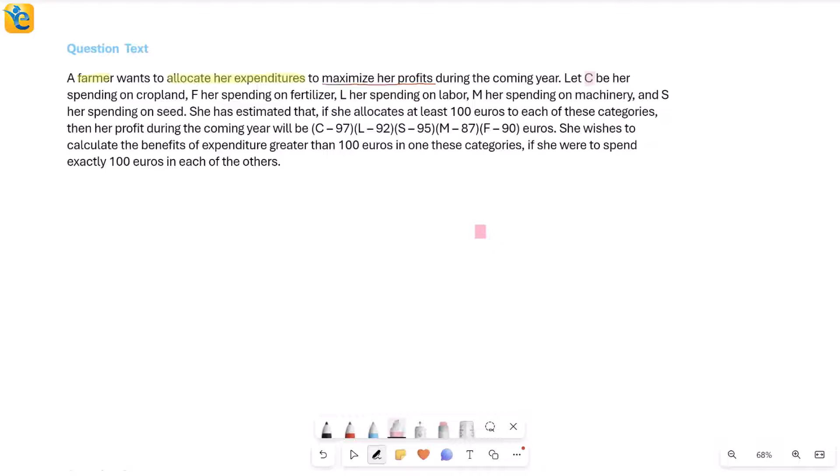C is what she spends on cropland, F is what she spends on fertilizer, L on labor, M on machinery, and S on seeds. So these are the different categories on which she has some expenditure. Now, how does this connect with profit?